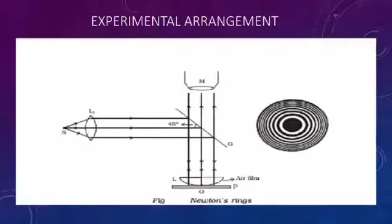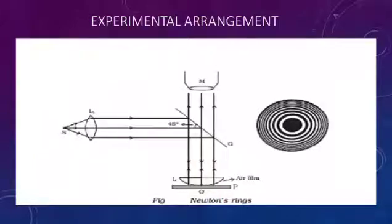With a 45-degree inclination, you can see the air film with light rays normally incident. A part of the light rays is reflected back by the curved surface of the lens, and a part transmitted from the lens is reflected back from the plain surface of the glass plate. These two reflected rays interfere, giving rise to an interference pattern in the form of circular rings. These fringes are localized in the air film, and therefore a long-focus microscope is used to see the pattern.